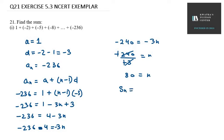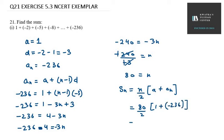Now the Sn formula is N over 2 into (A plus An). N is 80, so 80 over 2. A value is 1 and An value is minus 236. 80 over 2 is 40. 1 minus 236 is minus 235. Minus 235 into 40 is minus 9400. That means S80 is minus 9400. This is the answer for the first part.